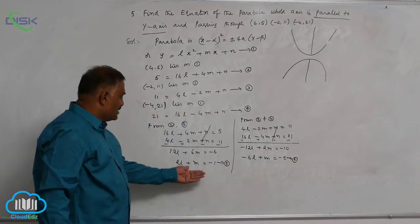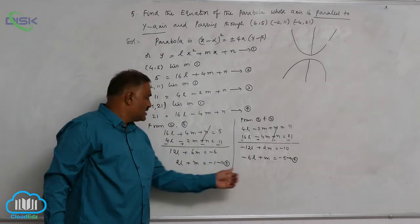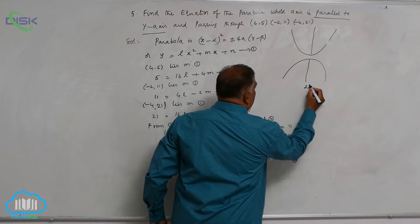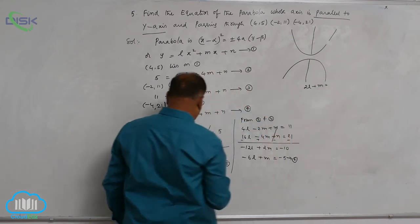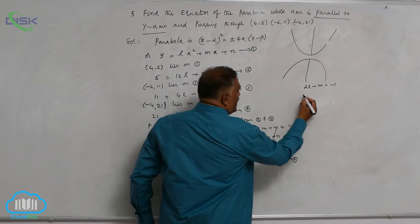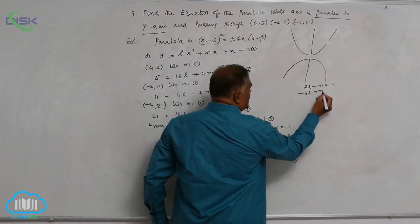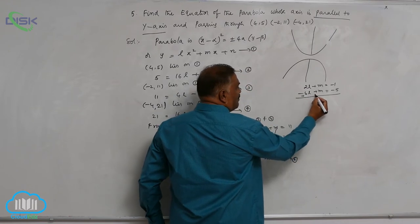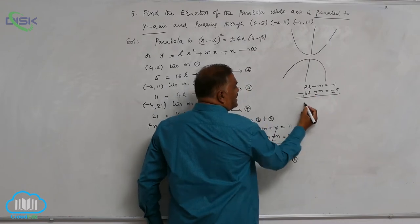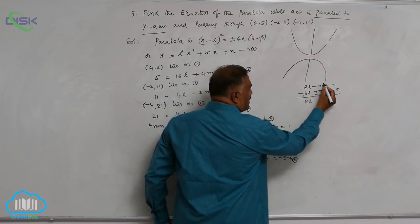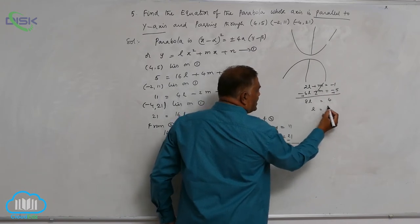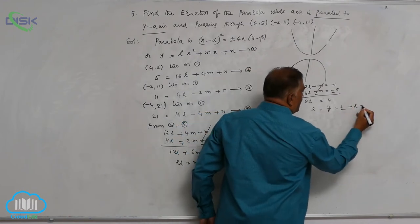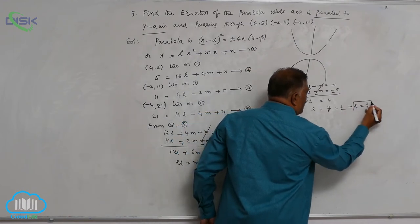Now we need to solve equations 5 and 6: 2l plus m equals minus 1, and minus 6l plus m equals minus 5. Taking subtraction, m cancels, giving 8l equals 4. So l equals 4 divided by 8, which is 1/2. Therefore l equals 1/2.